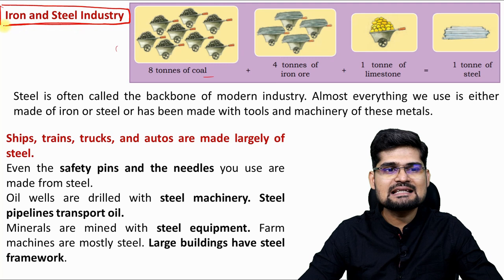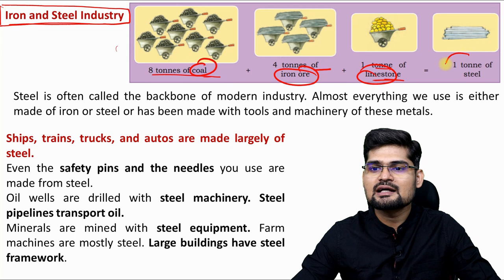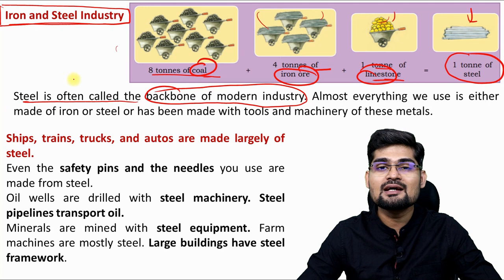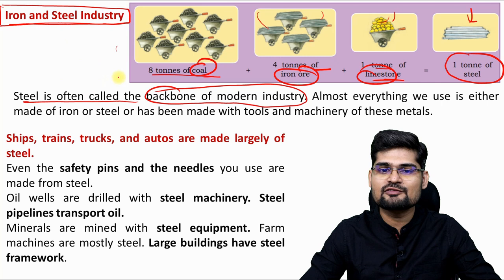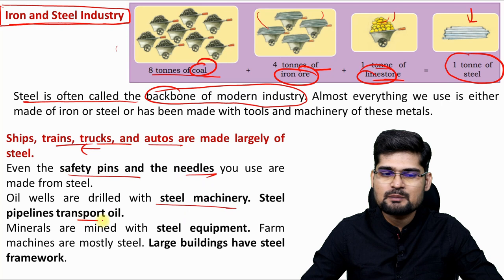Now let's look at the case study of iron and steel industry. Eight tons of coal, four tons of iron ore and one ton of limestone combined together give us one ton of steel. To produce steel, we need these three resources. Steel is often called the backbone of modern industry and modern urbanization — cities are built on steel. Almost everything in everyday life, from needle to tools, uses metals, mostly steel. Ships, trains, trucks, autos are major consumers of steel.